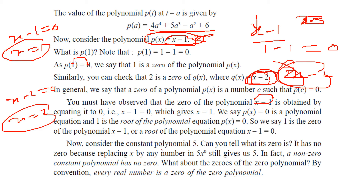Now consider a constant polynomial 5. Can you say what is its zero? It has no zero. Because this is a constant, there is no x to put some value to make it 0. A constant number cannot be a zero. So a non-zero constant polynomial like this has no zero.